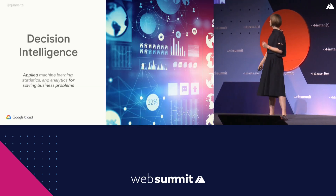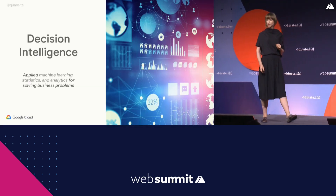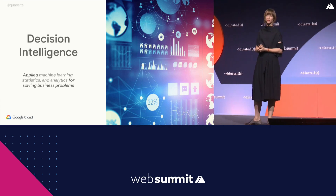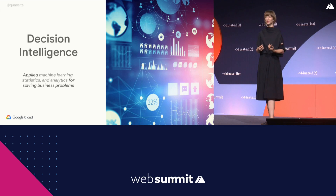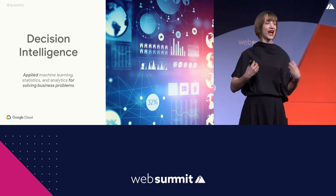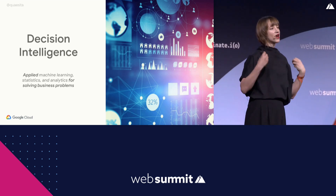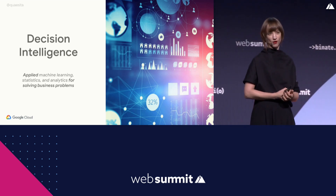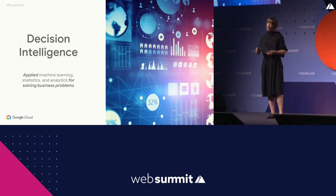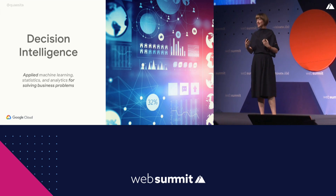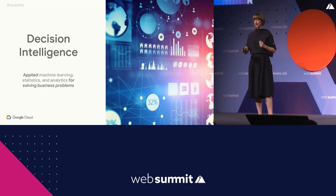At Google, we are trying to change this. We've started training our own staff in the applied side, which we're calling decision intelligence — in how to actually use machine learning and data to create real things, to improve the world around us. So I want you to get excited about actually using these things.